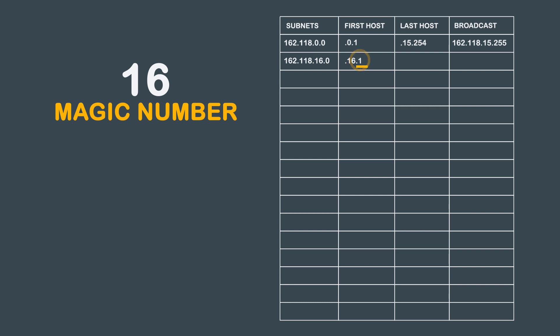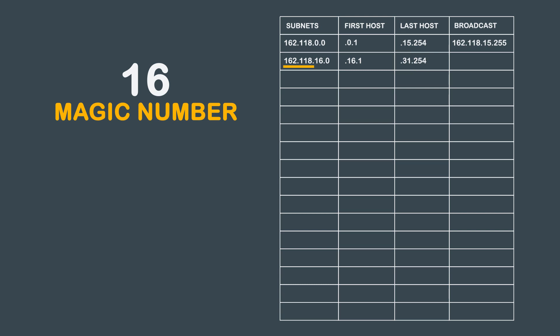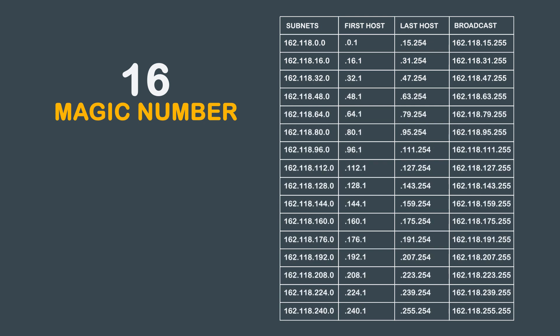To find the last host on this subnet, we again take the octet of concern, add the magic number to it, and then subtract 1: 16 plus 16 minus 1 equals 31. Again, we will use 254 in the last octet. Our last host is 162.118.31.254. Our broadcast is 162.118.31.255. Repeating this process for the remaining subnets, all of our valid subnets are now in the chart.